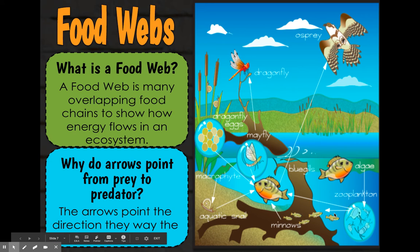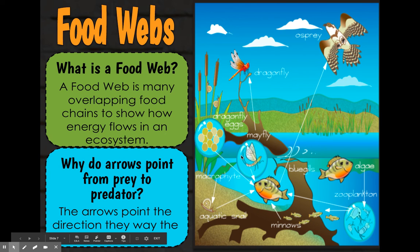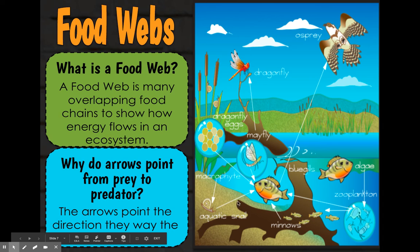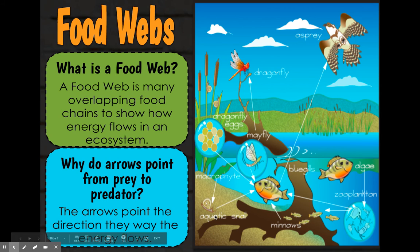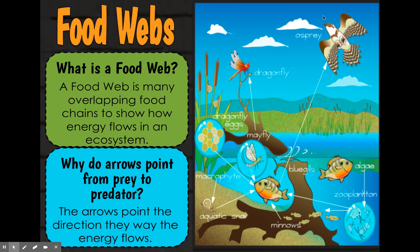Yesterday, a lot of you were telling me things that an owl might eat or things that a snake would eat, but it wasn't necessarily shown in the food chain. Remember that for something to receive energy from something else, it has to be shown in the food chain. For example, the macrophyte would be your producer here. The aquatic snail eats the macrophyte, and then the bluegill eats the aquatic snail. The osprey looks like our tertiary consumer up there and is the head of this food web.